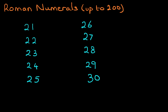So 21, well that's nice and easy. We know this from before. It is XXI. That is 21. 22 is XXII. So the X's represent 10. So we got 10, 20, 21, 22. How about 23? Well that is 10, 20, 21, 22, 23.